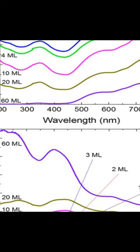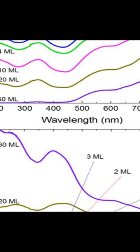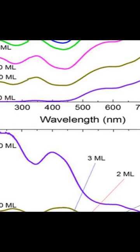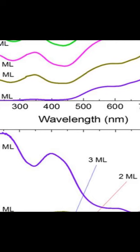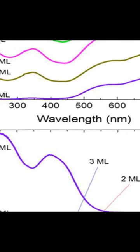A pulsed KrF excimer laser, wavelength 248 nanometers, pulse width 25 nanoseconds, was used to ablate a polycrystalline MoS2 target.